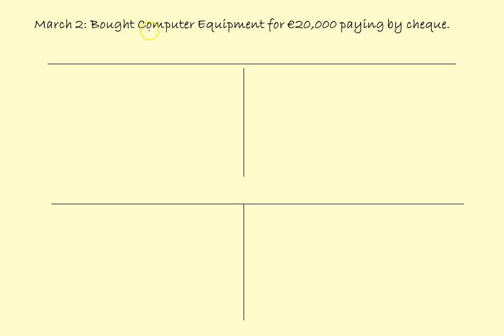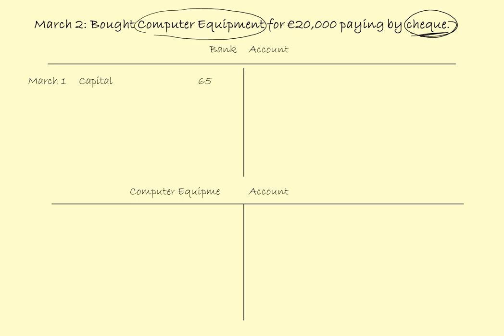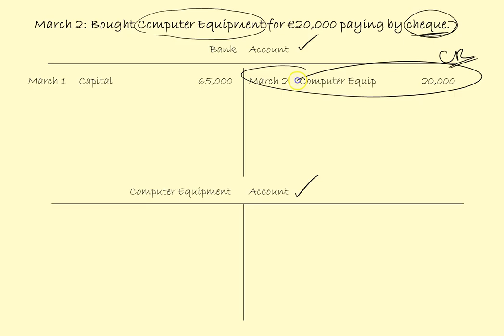Second transaction: March the 2nd, bought computer equipment for 20,000 paying by cheque. Paying by cheque implies the transaction went through the bank. So we need the bank account, which we already have, and we need to open up a new account for computer equipment. Money is coming out of the bank so we will be crediting the bank: March the 2nd, Computer equipment, 20,000. And the double entry will be to debit the computer equipment account.